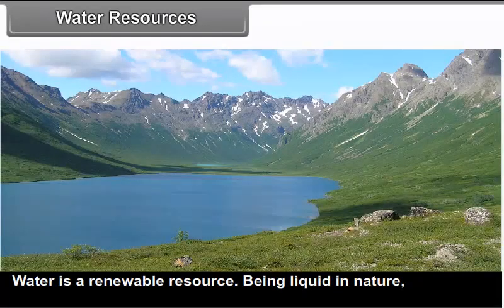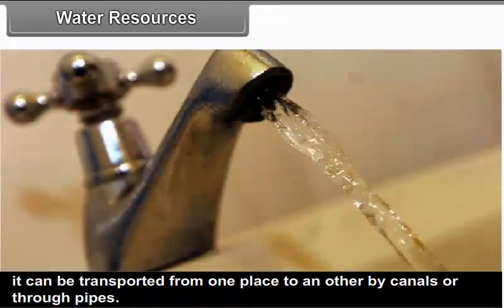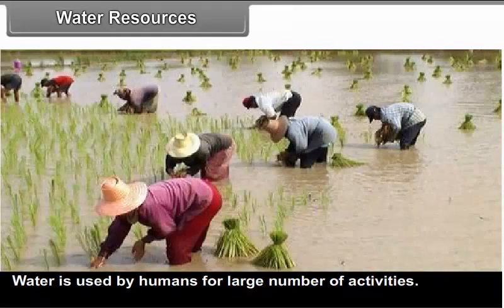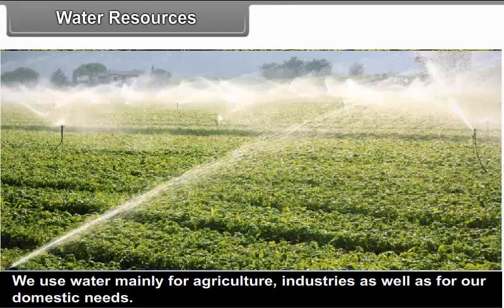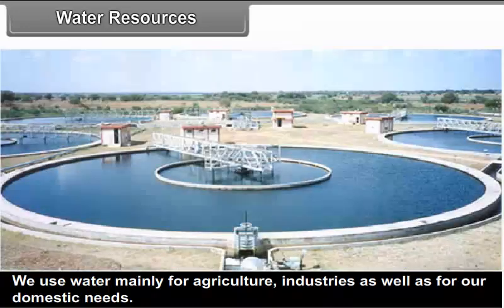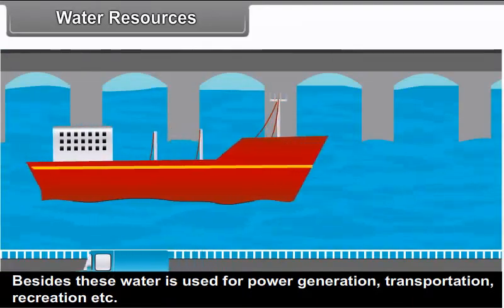Water is a renewable resource. Being liquid in nature, it can be transported from one place to another by canals or through pipes. Water is used by humans for a large number of activities. We use water mainly for agriculture, industries as well as for our domestic needs. Besides these, water is used for power generation, transportation, recreation, etc.